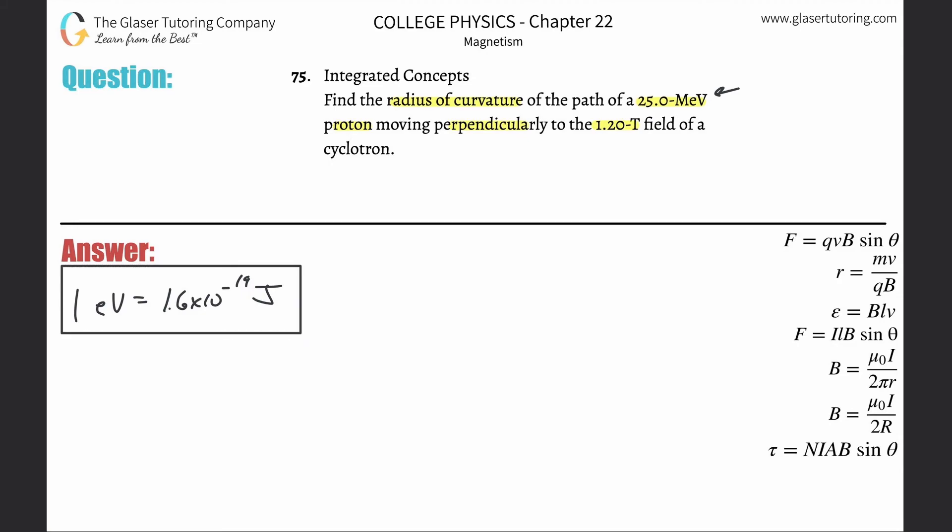So what I'm going to do is first convert this mega electron volt into joules. So we've got 25 mega electron volt, mega electron volt on the bottom, electron volt on the top. There's 10 to the 6 electron volts in 1 mega electron volt. And then electron volt on the bottom, joules on the top, 1.6 times 10 to the minus 19th joules for every one. So this is going to be 25 times 10 to the 6th times 1.6 times 10 to the minus 19th. So that works out to 4 times 10 to the minus 12th, and that is in joules. So that's the energy.